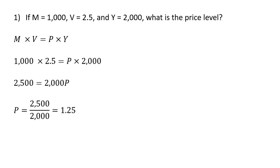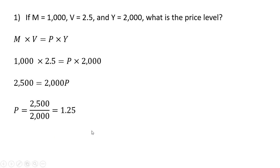Example one: if the money supply is 1,000, the velocity of money equals 2.5, and real GDP is 2,000, what is the price level? Writing our quantity equation and plugging in the known values, the unknown is the price level. Solving: 2,500 equals 2,000P, dividing by 2,000, the price level in this example is 1.25.